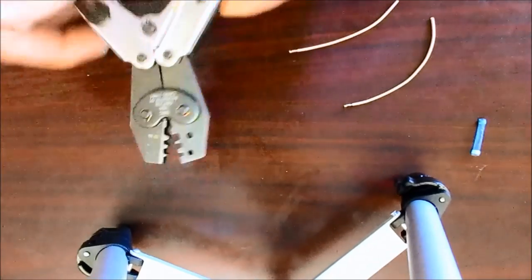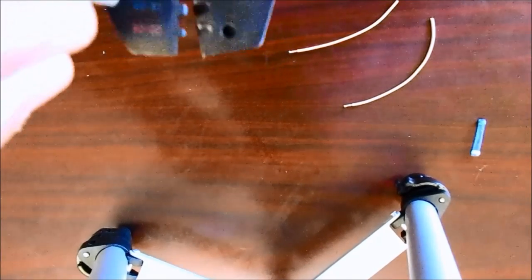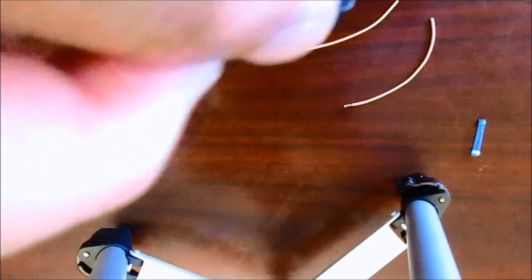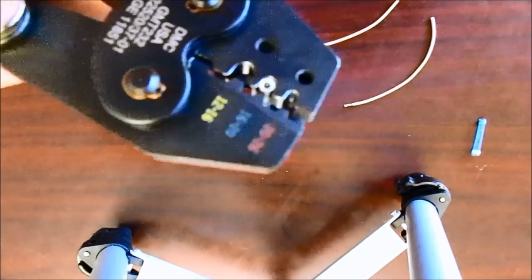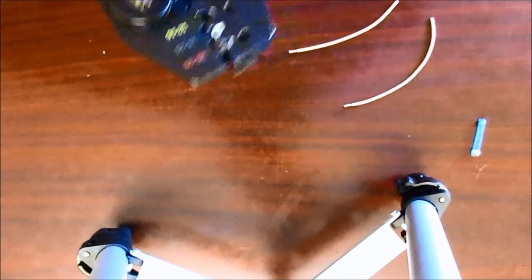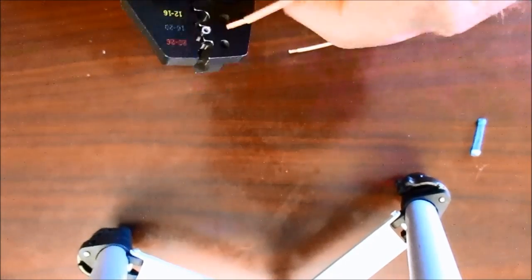We're going to take the splicer and we're going to drop it in the tool, hopefully you can see that, and we've got it in the blue slot. Next, what we do is we'll just load the wire like so.